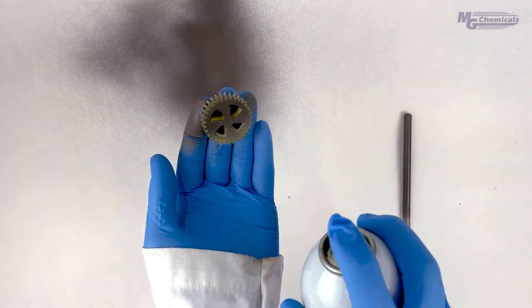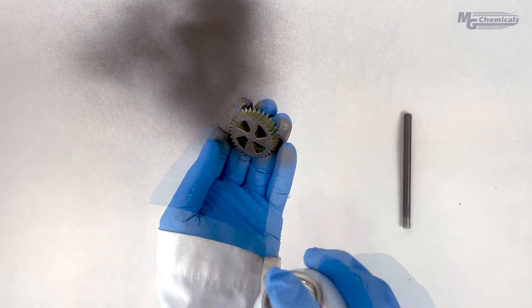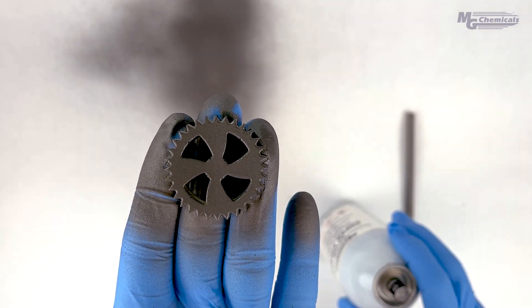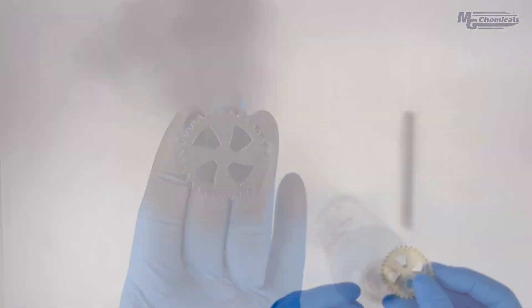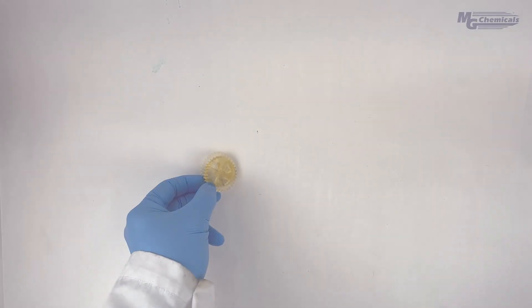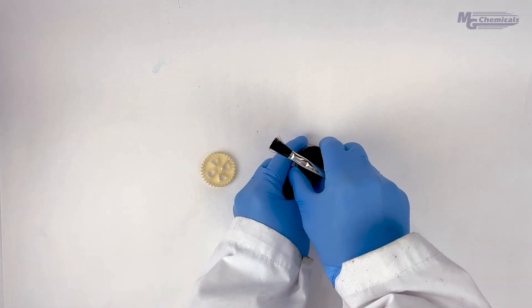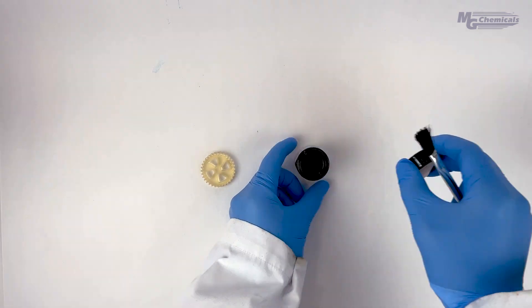The paint conforms well to these shapes, ensuring the whole part is conductive and should plate evenly. The paint can be applied either by spraying or using a brush.